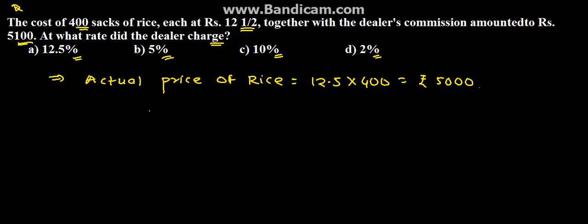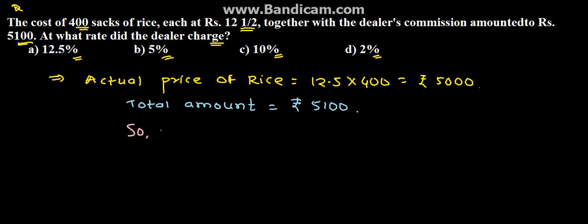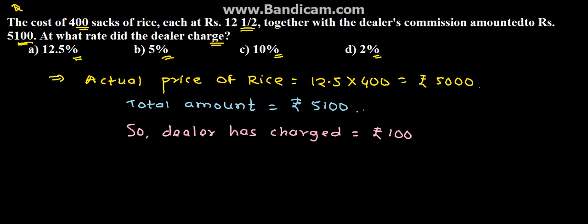Now let us see what is the total amount given. The total amount given is ₹5,100. Therefore, from this we can say that the dealer has charged ₹100, because there is a difference of ₹100.